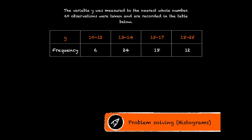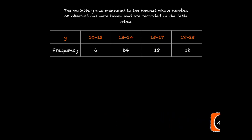So now we're going to have a look at other problems involving histograms. So in this question, the variable y was measured to the nearest whole number. 60 observations were taken and are recorded in the table below. What are the class boundaries for the 13 to 14 class?